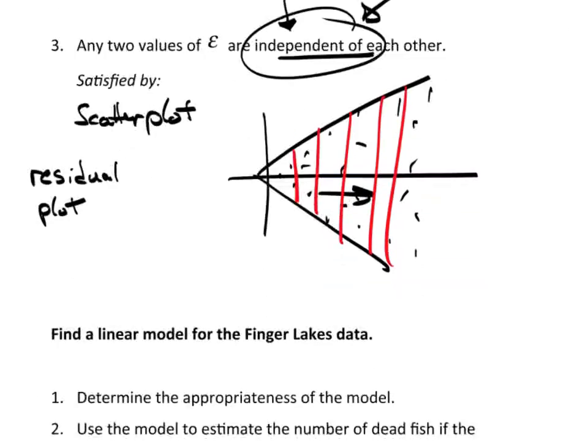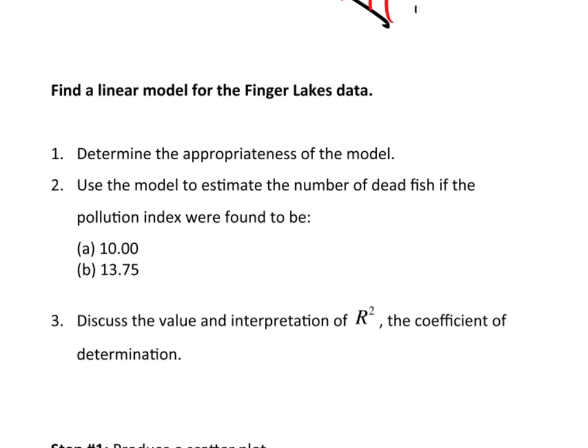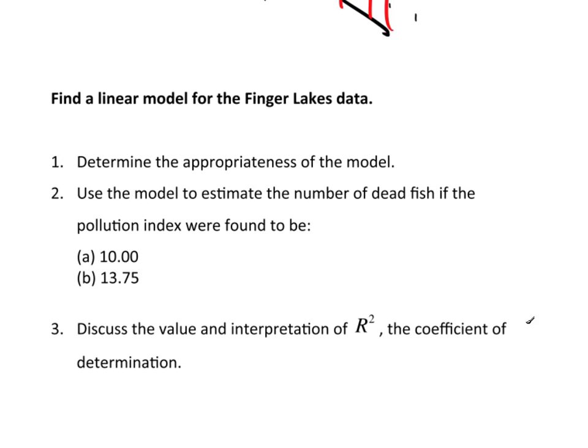So let's take a moment and work with the Finger Lakes data. And let's see what happens. I want to determine the appropriateness of the model, which means I'm going to do a scatter plot and go through the whole process. I want to use the model to estimate the number of dead fish if the pollution index were to be, say, 10 and 13.75. So I need to talk about how I would actually use the model. And I want to discuss the value and interpretation of r squared, the coefficient of determination.